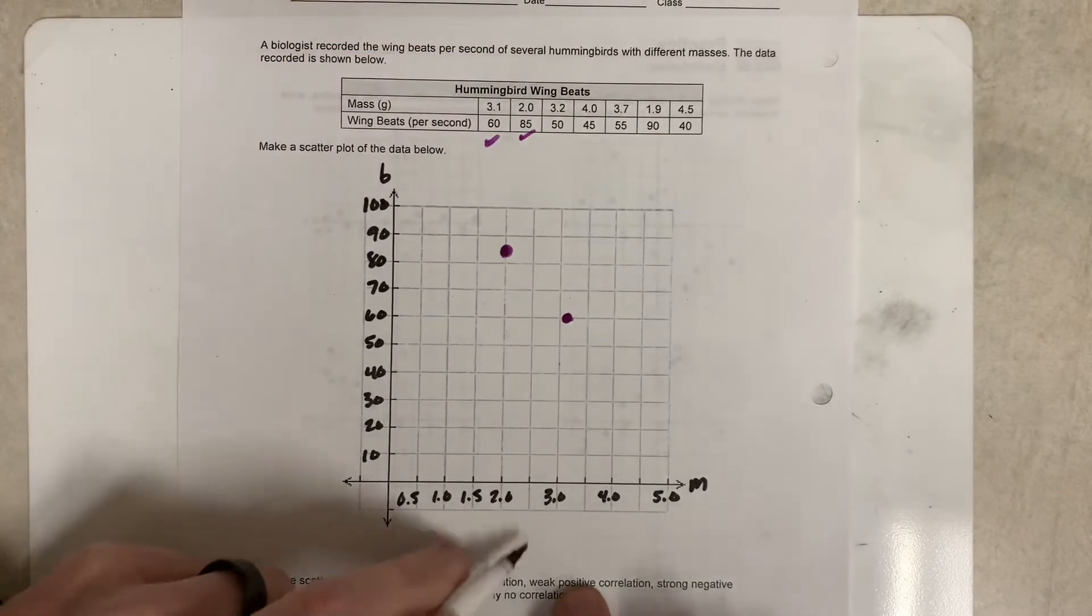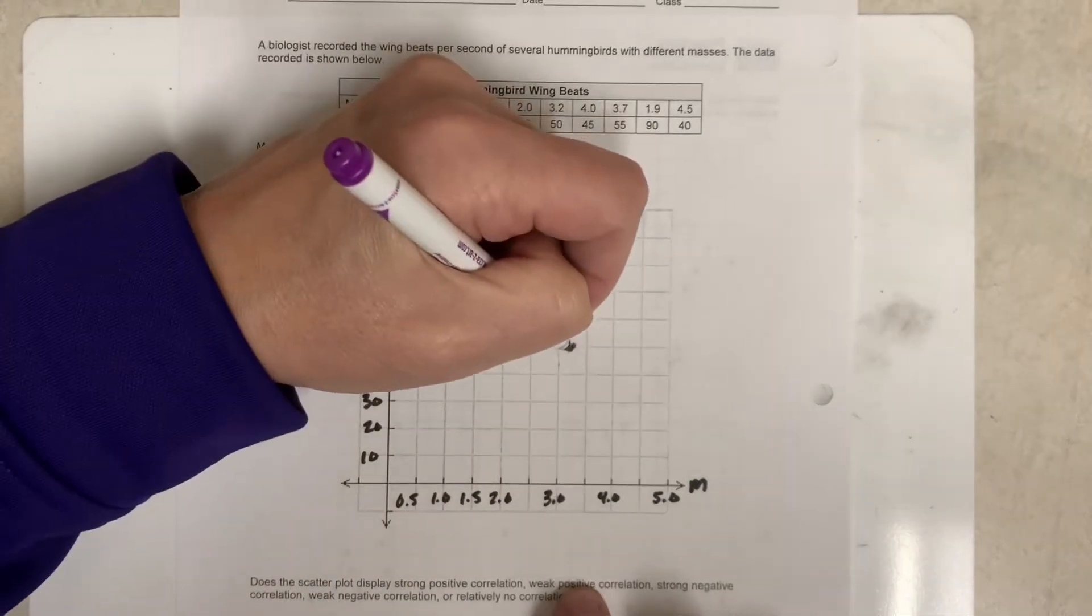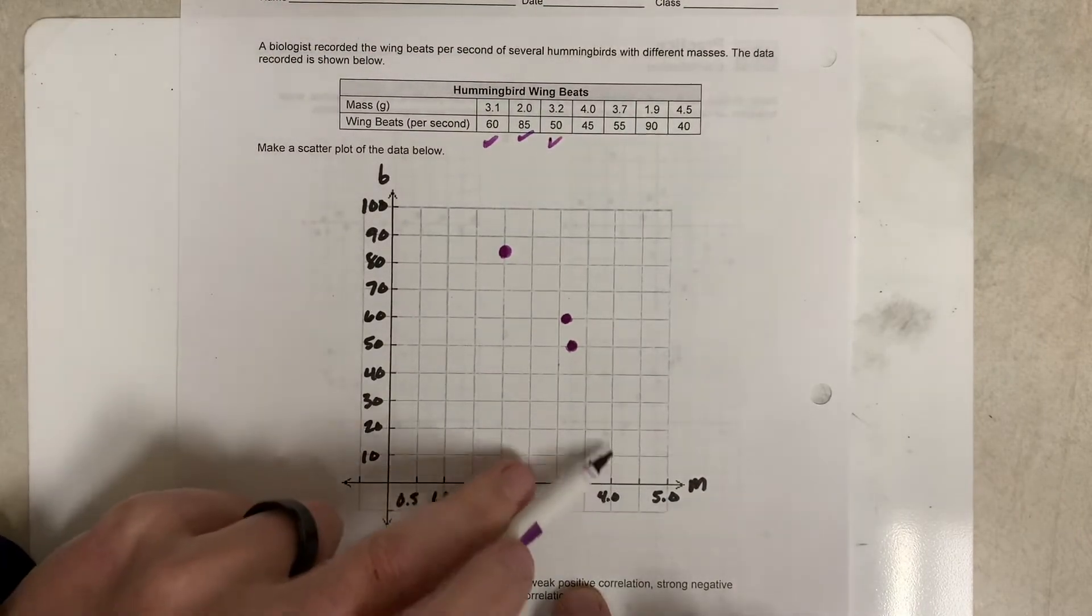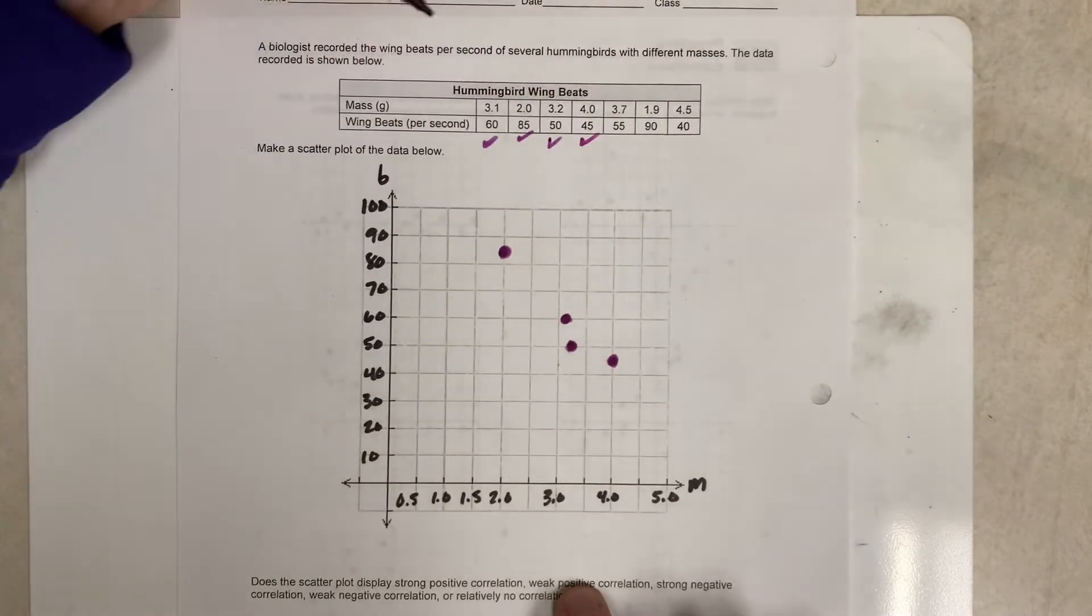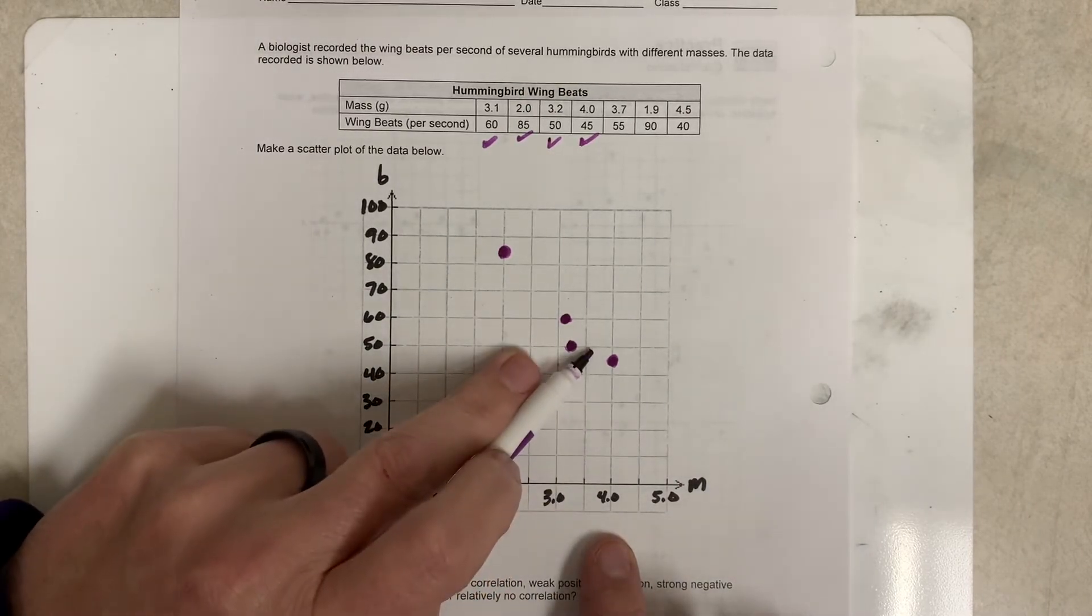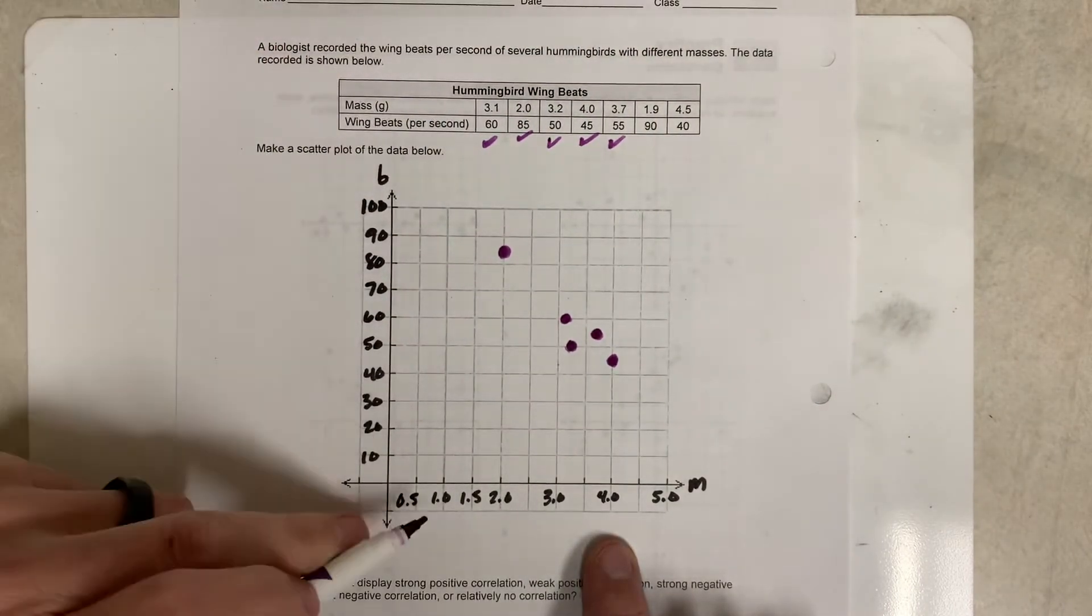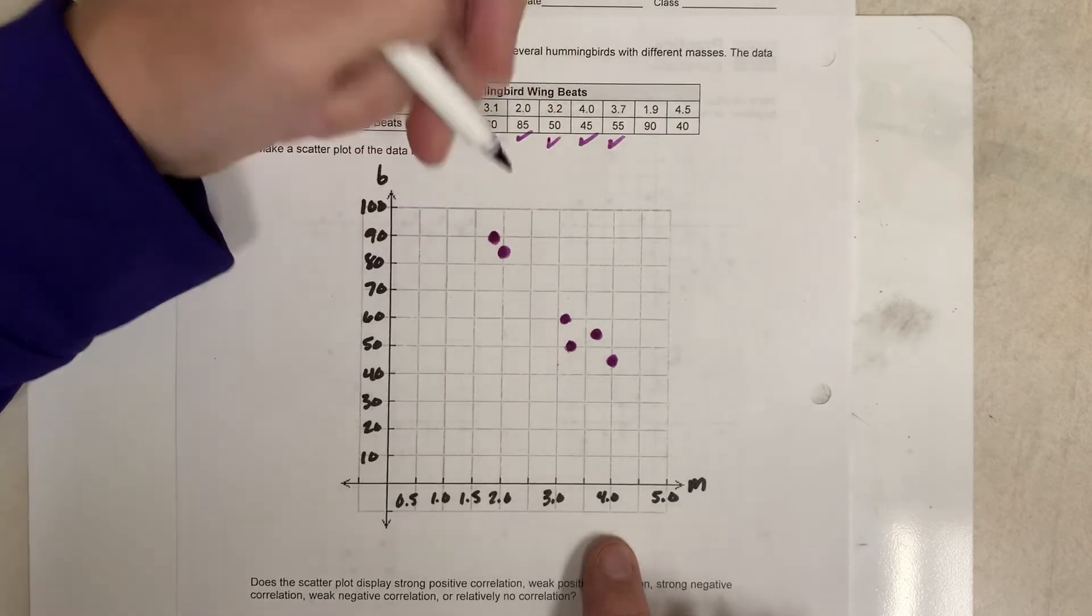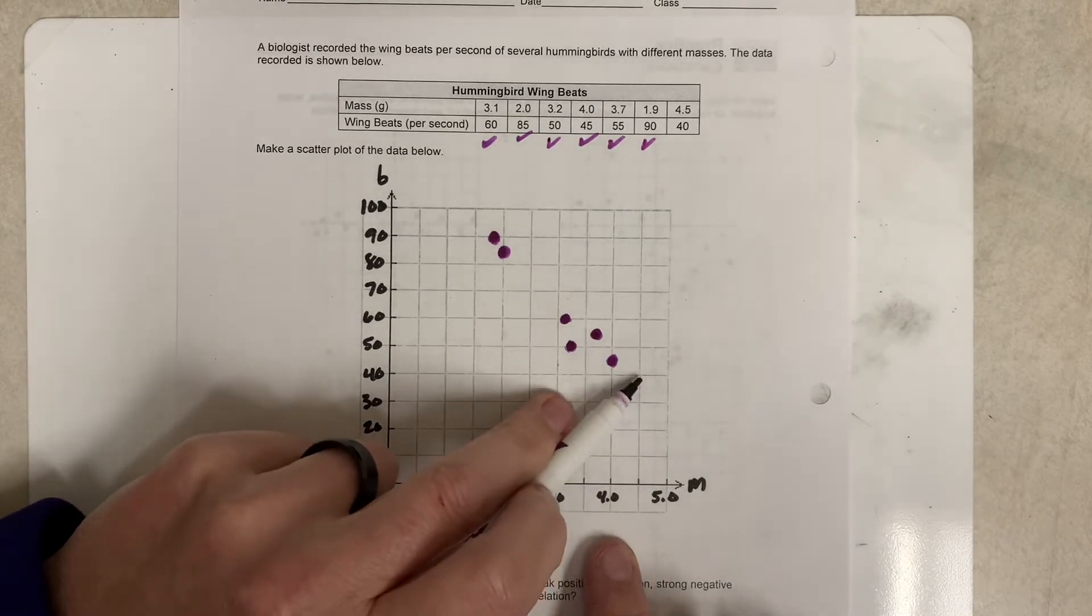3.2, 50. This is 3.5, so 3.2 would be a little bit past that. 50 would be about right there. You just have to guess. 4.0, 45. So 4.0, 45 would be right in the middle. 3.7, 55. 3.7 would be about right there. 55 right in the middle, so we're about right here. 1.9, 90. 1.9 is right before 2.0, and 90 is all the way at the top, so maybe right there. And 4.5, 40, which would be exactly this dot right here.